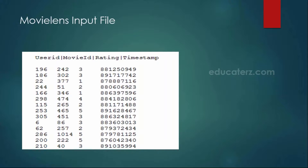We are going to process this MovieLens information file and find out the average movie rating for individual movies. For example, movie ID 242 has a rating of 3 given by user 196, but another user could also rate the same movie as 4 stars. So in this example we are going to find out the average movie rating.